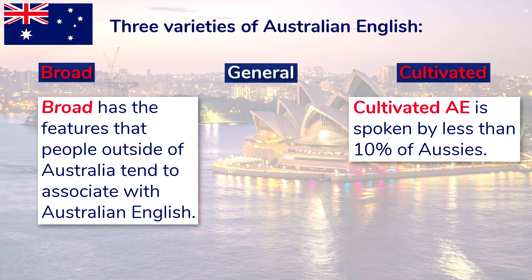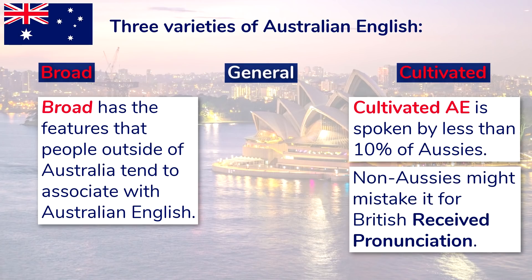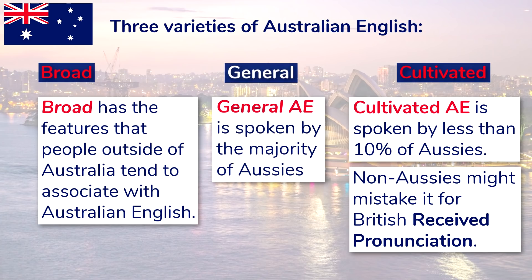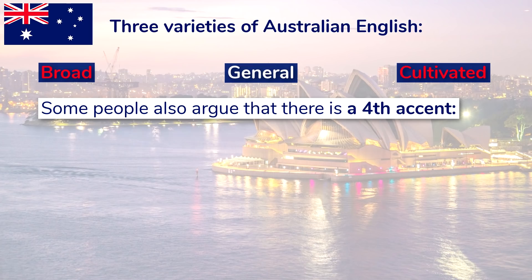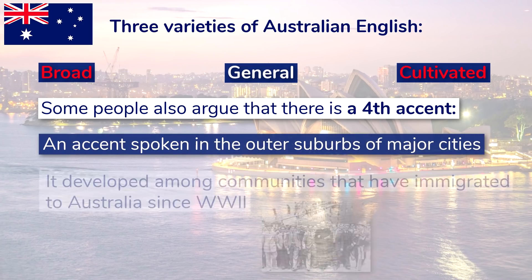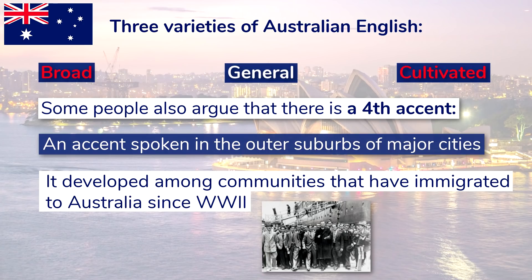Cultivated Australian English is spoken by less than 10% of Aussies, and non-Aussies might mistake it for British received pronunciation — it has many fewer obviously Australian features. General Australian English is spoken by the majority of Aussies and is somewhere between the two. These different varieties are not regional; for the most part it's hard to tell the difference between people from Brisbane, Melbourne, Sydney, and other cities based on their accents. Some also argue there's a fourth accent of the outer suburbs of major cities, which developed among communities that immigrated since the Second World War.